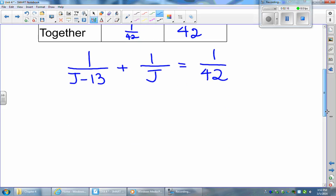Now we have a rational expression, so we just have to solve using the rules that we've learned. We're going to find the lowest common denominator. The lowest common denominator is all the factors on the bottom that are unique. So j minus 13 is a unique factor,